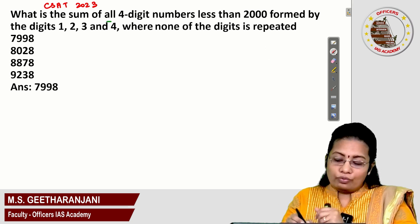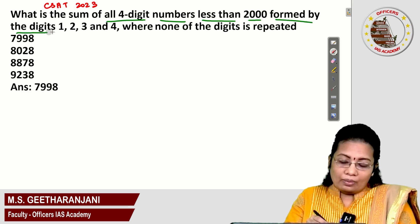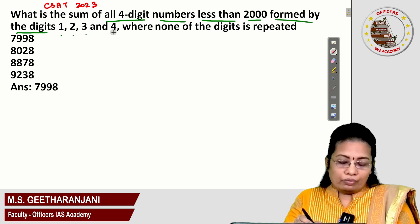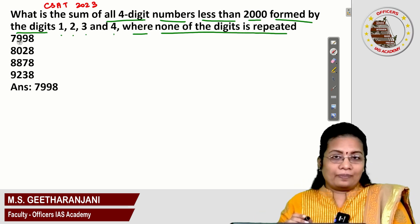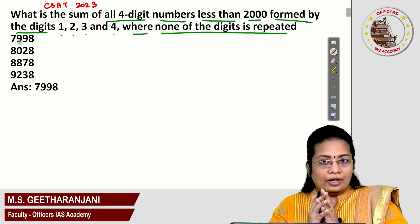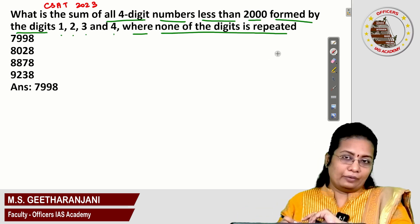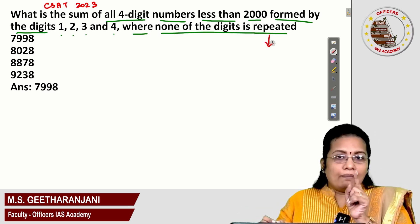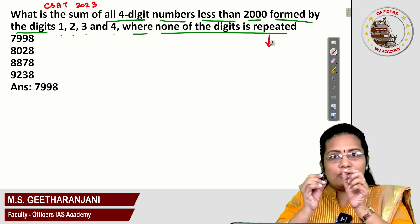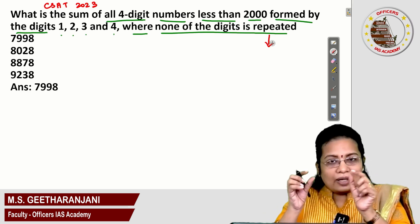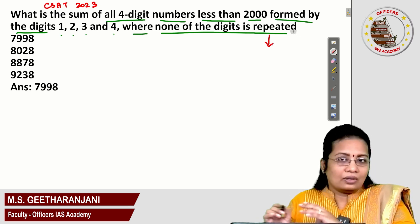What is the sum of all four-digit numbers less than 2000 formed by the digits 1, 2, 3 and 4 where none of the digits is repeated? The digits should not be repeated — once you use a digit to create the four-digit number, you should not use it again in the same number. That is the meaning of 'without repetition,' as given: none of the digits is repeated.